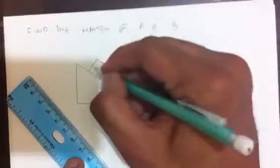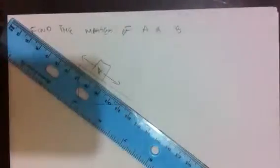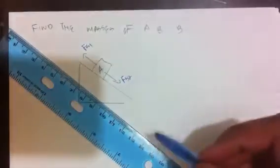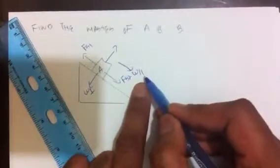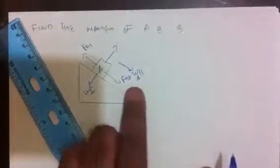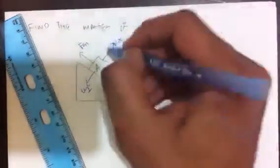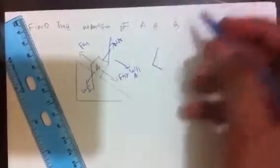We begin by drawing a free body diagram. I'll draw Block A here for reference. Block A is being acted upon by the force of Spring 1, the force of Spring 2, a weight component perpendicular to the surface (the normal force), and the weight component parallel to the surface — denoted as W_A parallel — which is a known force.